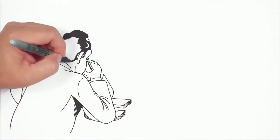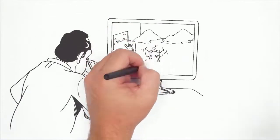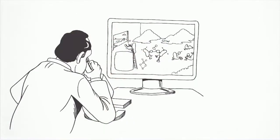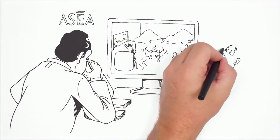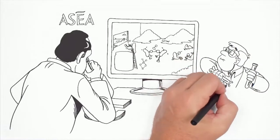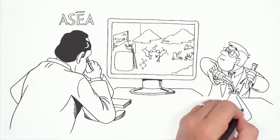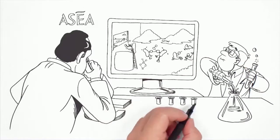So to make a redox signaling supplement outside of living cells, it makes sense to start with the same building blocks: salt and water. That's just what a company called ASEA does. We begin with a pure, pristine saline solution.